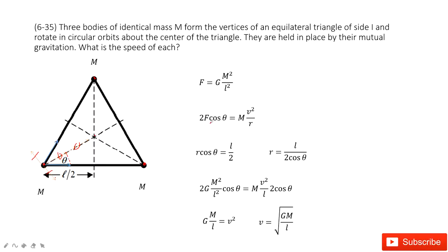So 2 times F cosine theta equals the mass times the central acceleration. Central acceleration is V squared divided by R. We need to find V, the velocity speed.